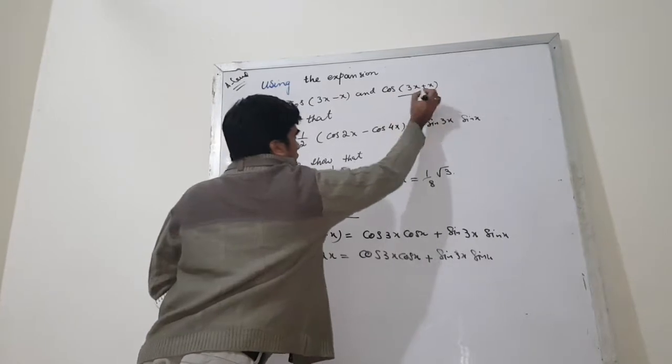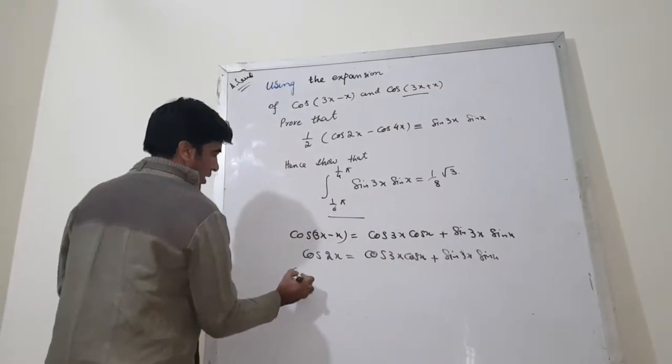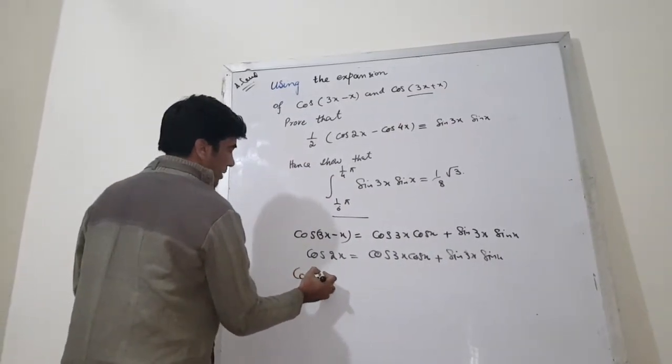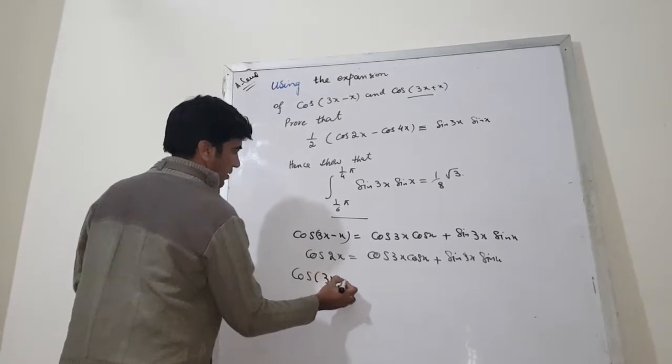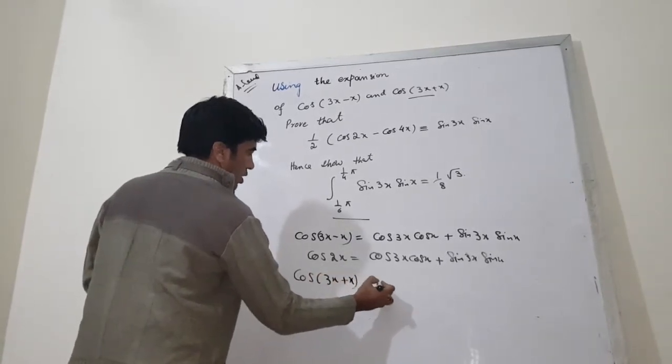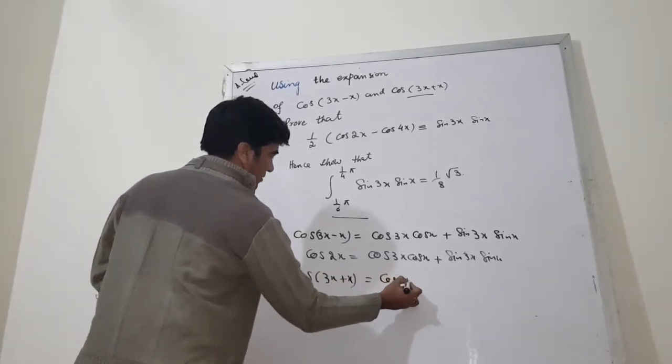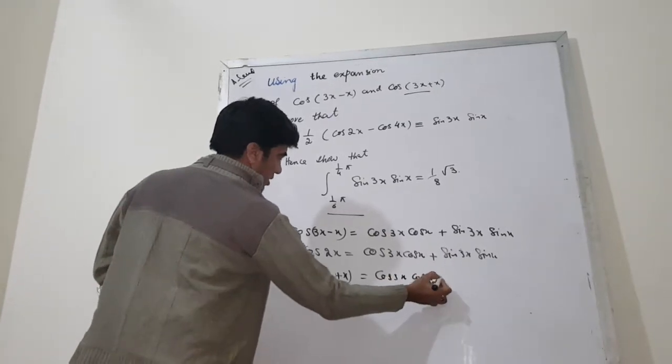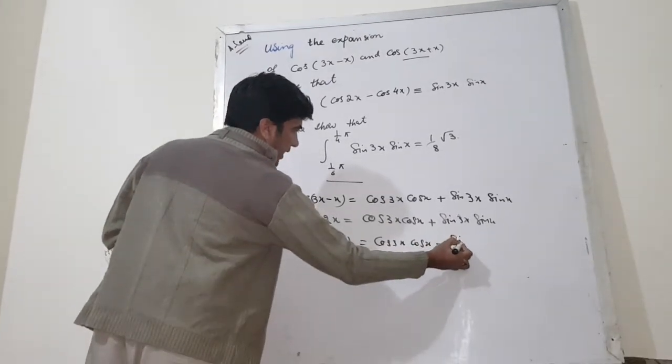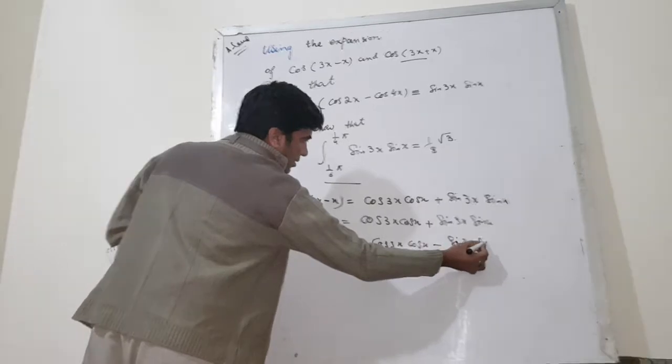Now, same way, I go for this, and applying the same formula for this. Cos 3x cos x minus sin 3x sin x.